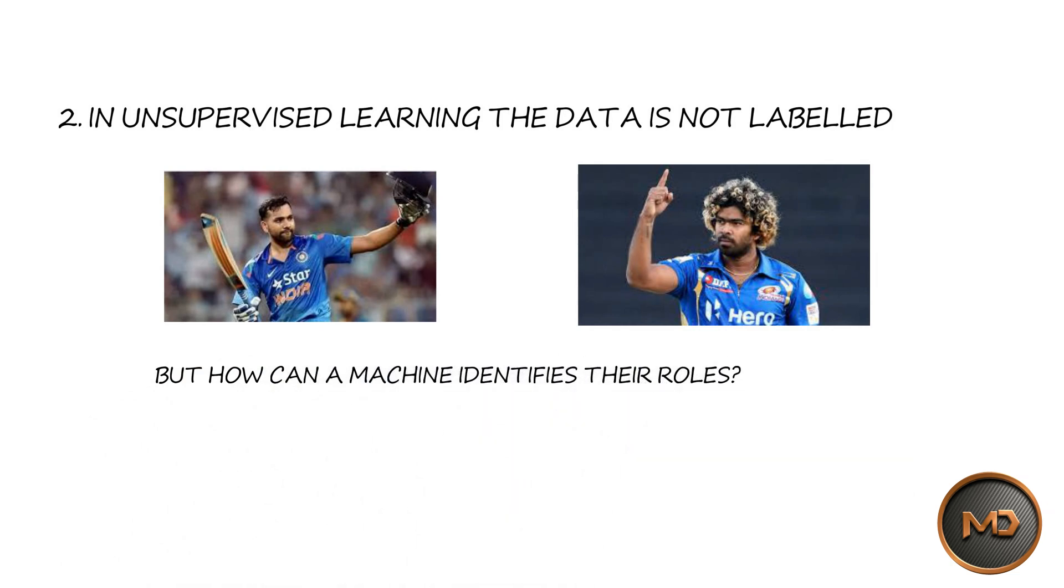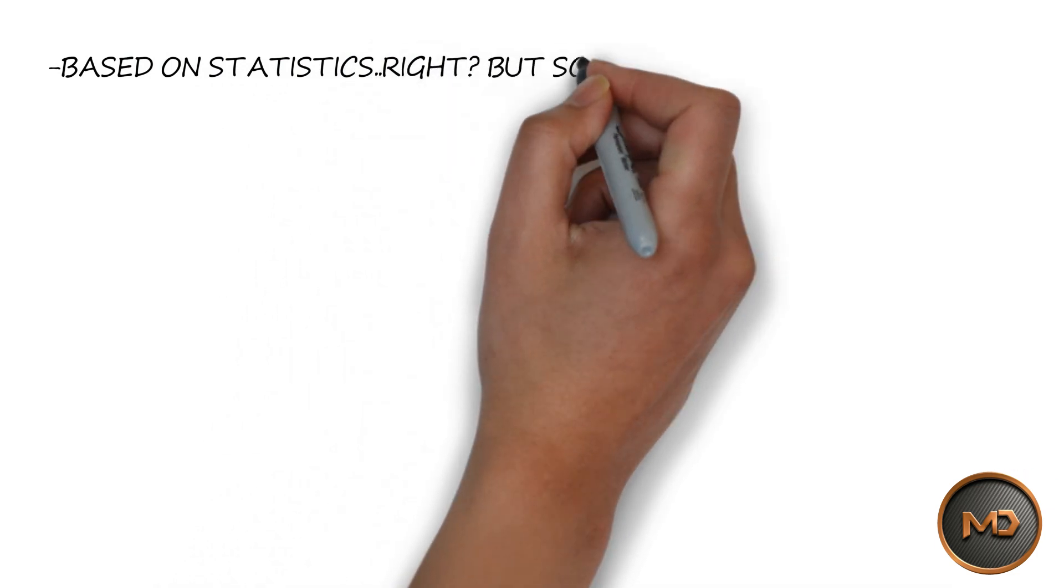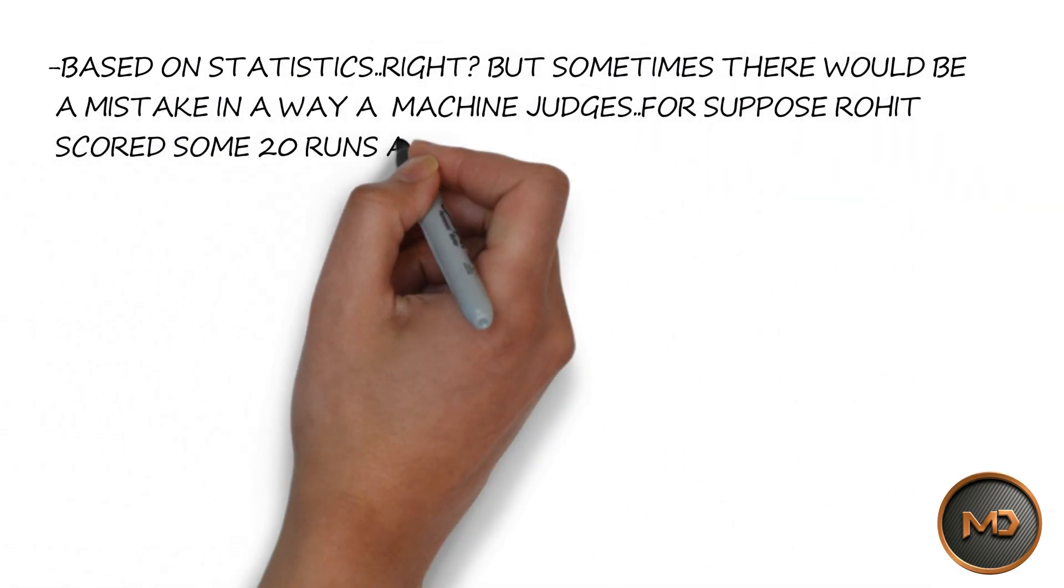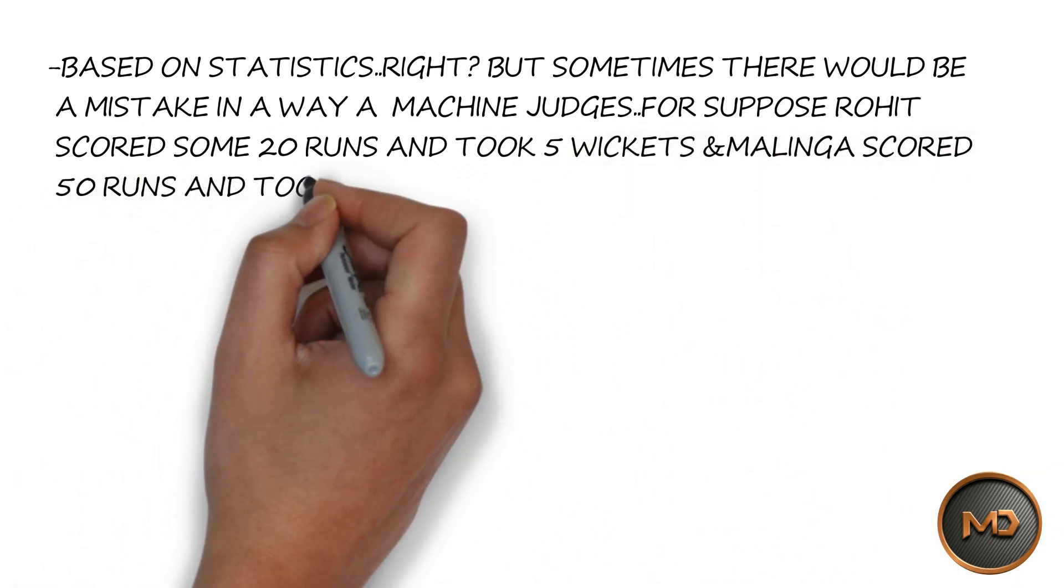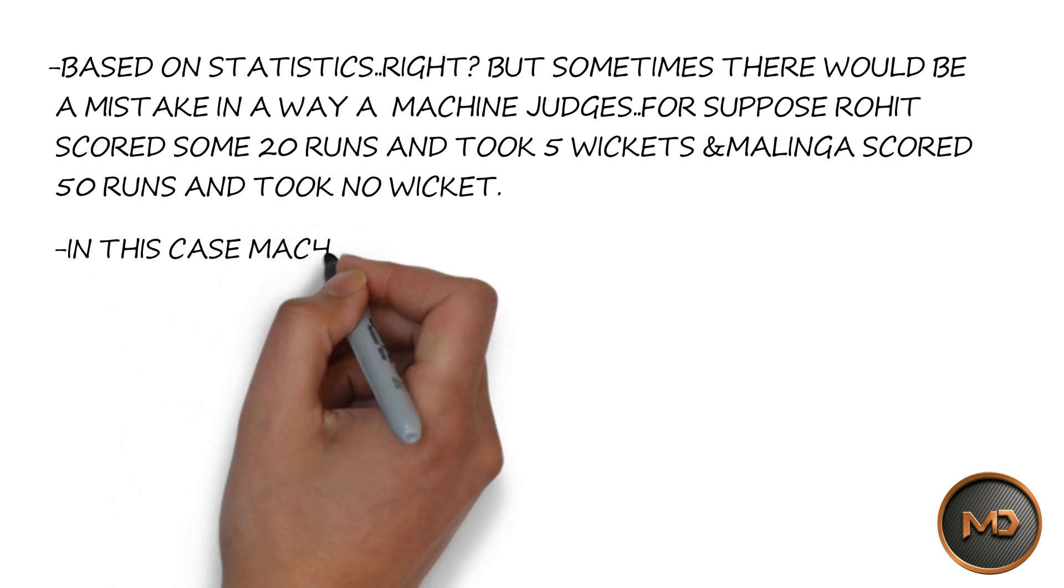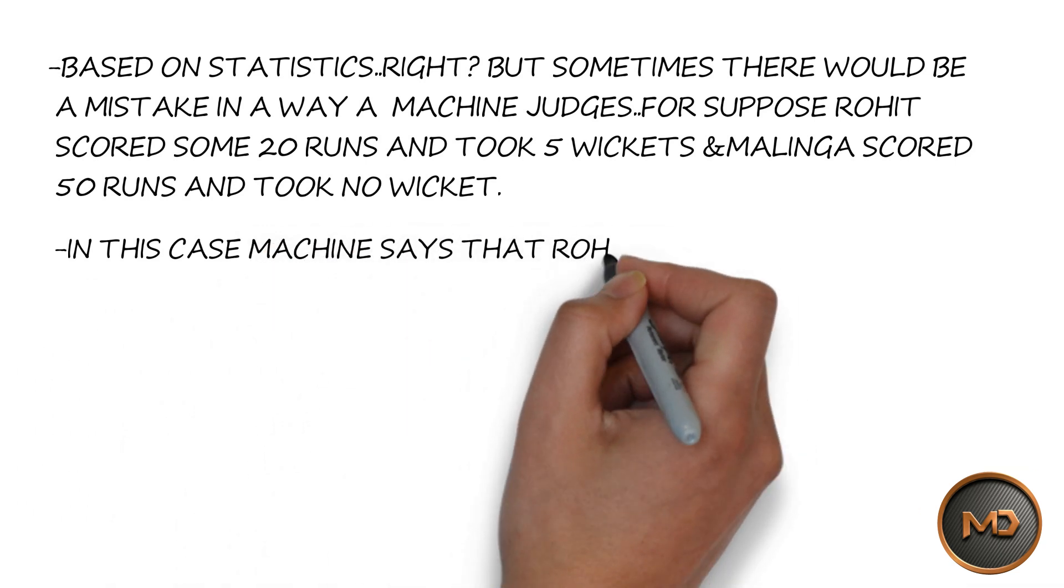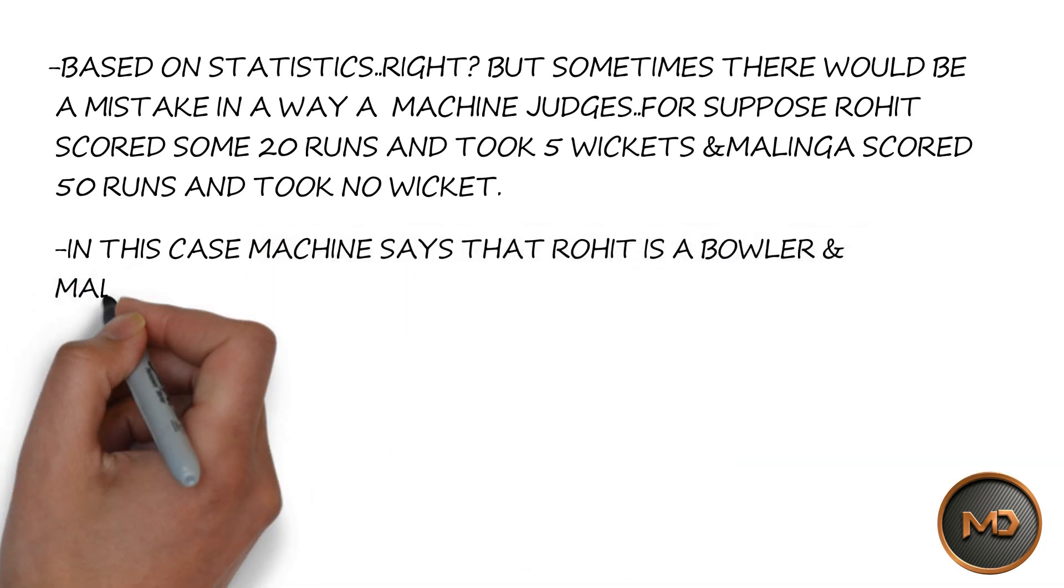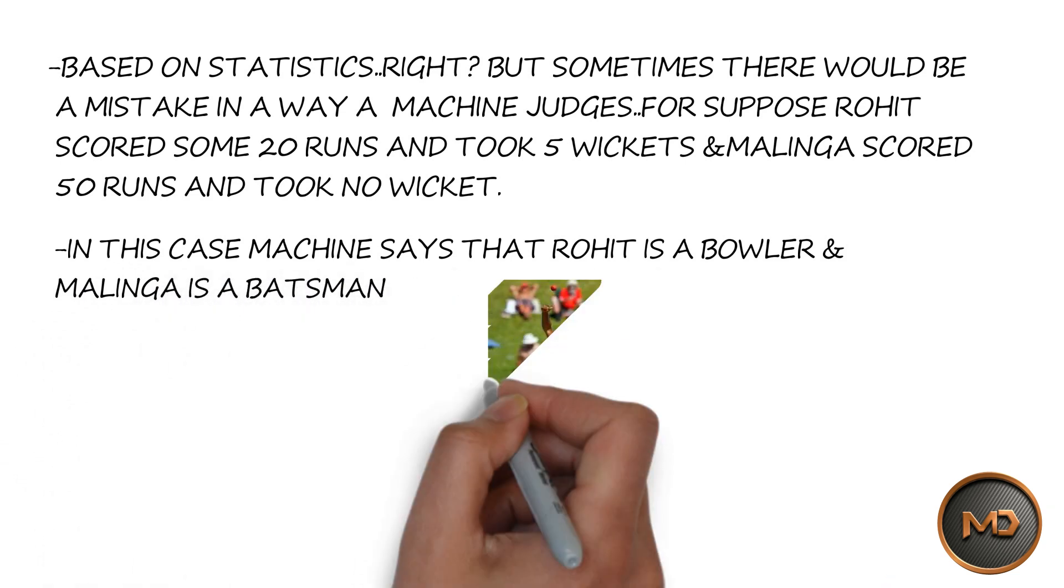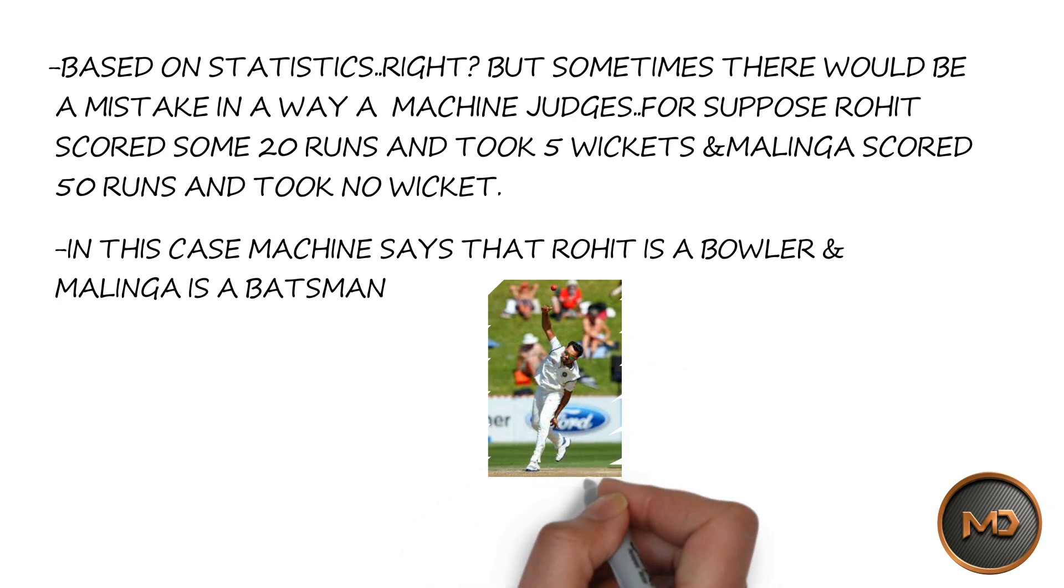Based on statistics right? But sometimes there would be a mistake in the way a machine judges. Suppose Rohit scored 20 runs and took 5 wickets and Malinga scored 50 runs and took no wicket. In this case machine says that Rohit Sharma is a bowler and Lasith Malinga is a batsman. This is the major drawback of unsupervised learning.